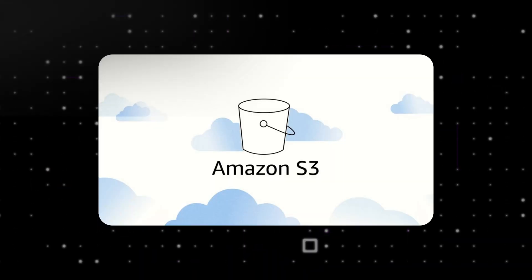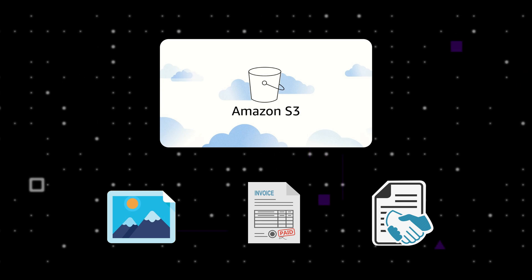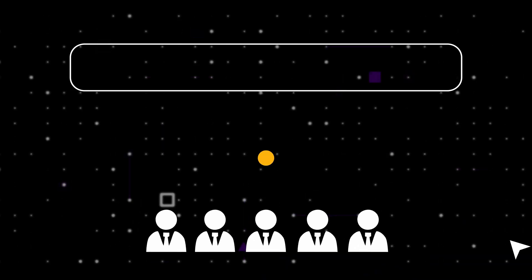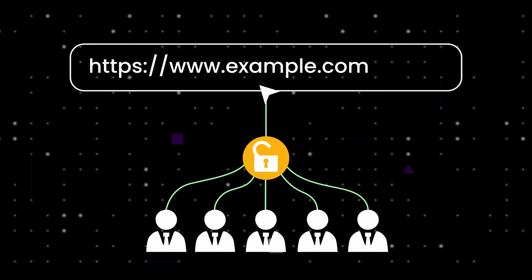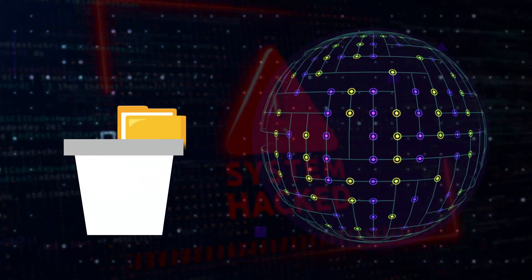Picture this: your company uses Amazon Web Services to store all kinds of files. Some are harmless marketing images, but others might include sensitive invoices, customer contracts, or internal reports — all sitting in an S3 bucket, which are basically folders in the cloud. Many companies set up their S3 buckets in a hurry and accidentally leave them wide open to the internet. That means anyone, even without a password, could type in the right URL and download those private files. This exact mistake has led to huge data breaches for some of the world's largest companies.